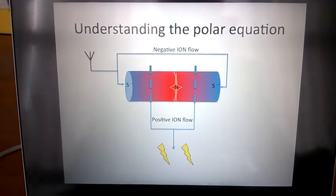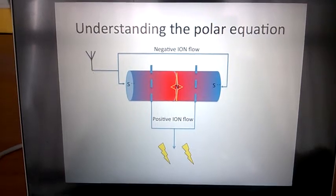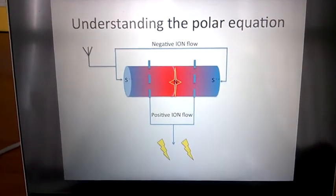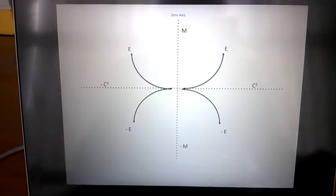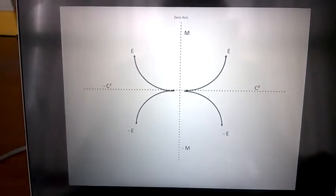This is a polar equation, and trying to understand how you can take a magnet, an aerial, and get power from it. To understand it, you need to understand what's going on at the atomic level.